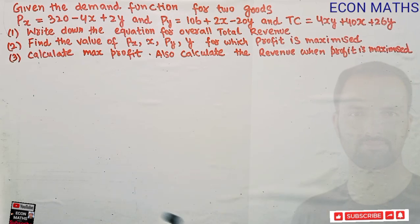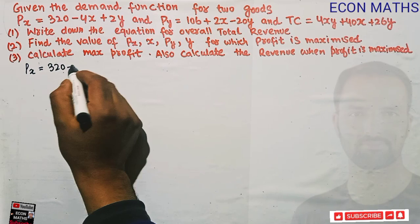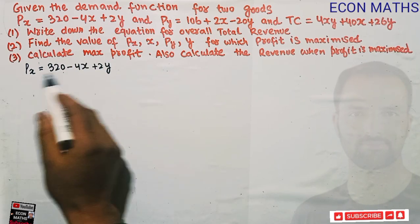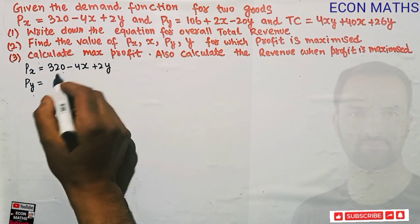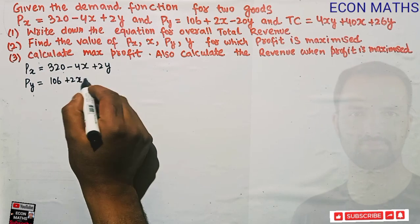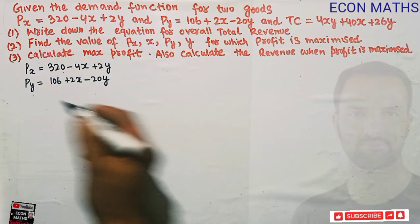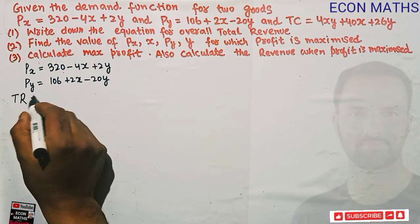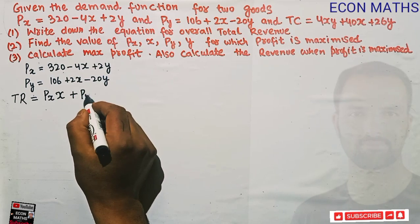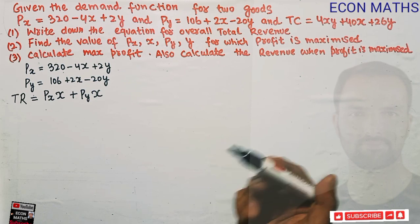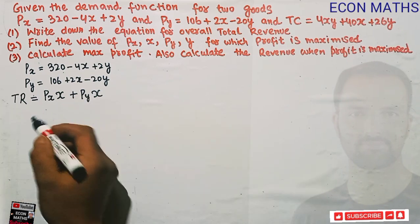Coming to the question, the demand function is P_X = 320 - 4X + 2Y. This is the inverse demand function for good X. Similarly, the inverse demand function for good Y is P_Y = 106 + 2X - 20Y. Now, since we have to find the total revenue function, we know that total revenue equals P_X times X plus P_Y times Y.